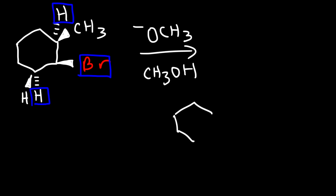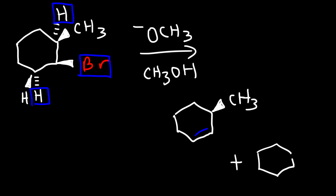This is the first E2 product we can get, with the double bond on this side. We can also get a second product. Looking at this alkene, how many other carbon atoms are attached to those double-bonded carbon atoms? There are only two other carbon atoms, so this is a disubstituted alkene — it has two R groups.